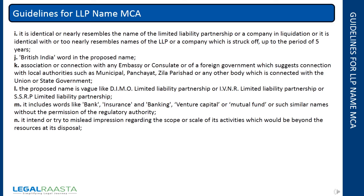J. The proposed name includes the words 'British India'. K. The name suggests association or connection with any embassy, consulate, or foreign government, or connection with local authorities. L. The proposed name is vague, such as 'DIMO LLP', 'IVNR LLP', or 'SSRP LLP'. M. It includes words like Bank, Insurance, Banking, Venture Capital, or Mutual Fund, or similar names without permission of the regulatory authority.